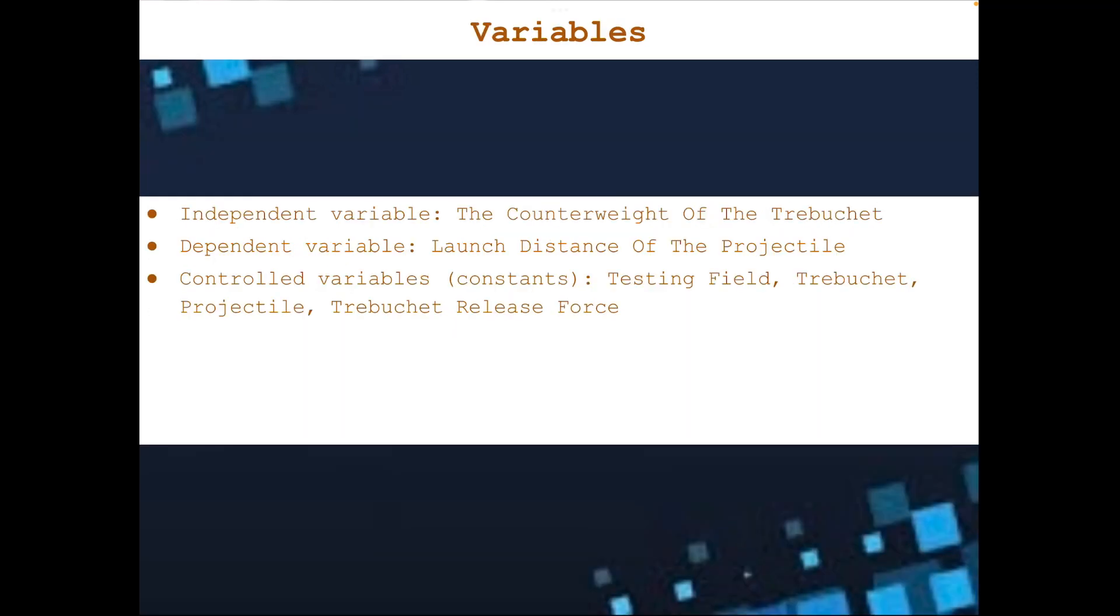Here are the variables in this project. The independent variable is the counterweight, and the dependent variable is the launch distance of the projectile. Some constants, or controlled variables, include the testing field, the projectile itself, and the trebuchet release force.